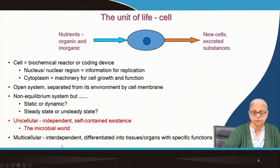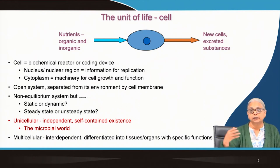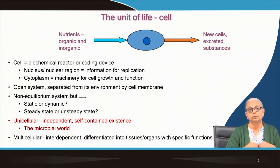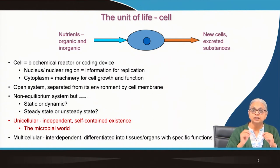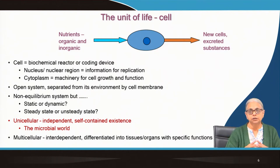There are multicellular higher organisms whose cells are interdependent, differentiated into tissues and organs with specific functions. If you remove a cell from your skin and give it all the nutrients it needs, it still will not reproduce because it is dependent on other cells for all its functions. Every cell in our body is differentiated with specific functions and is interdependent on other cells, tissue, and organs. We are going to restrict ourselves to unicellular microorganisms.